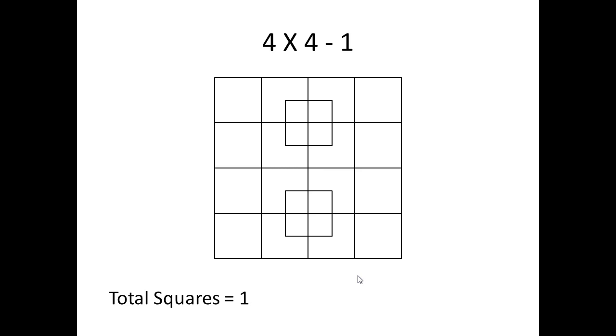From there we can look at the 3x3 grids. We can see how many of those there are. Well 3x3 grids is 1, 2, 3 and 4 of those. So four 3x3 grids brings us up to a count of 5.